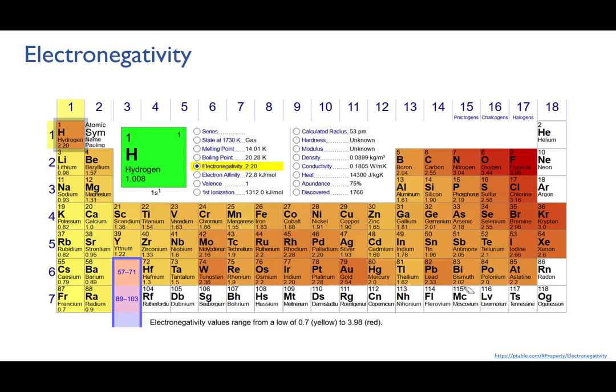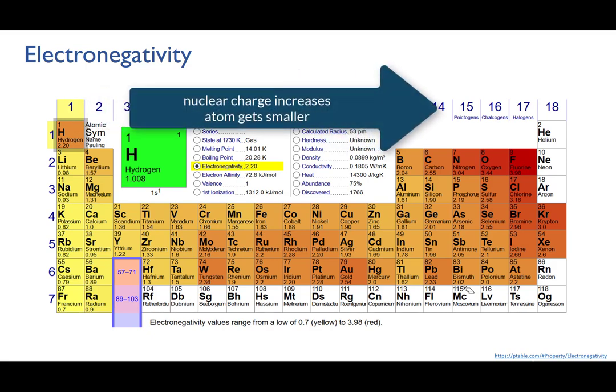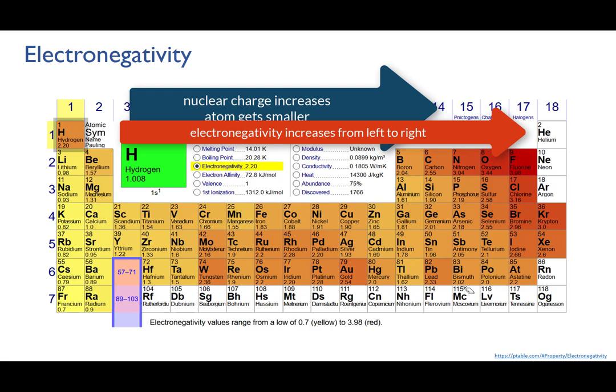So, what's going on is that as you go across a period, the nuclear charge increases, while the atom gets smaller, which means that the distance of the bonding electrons from the nucleus decreases. Remember that trend for atomic radius. Also, the shielding doesn't change that much, because you're staying in the same electron level. The total effect is that electronegativity increases.